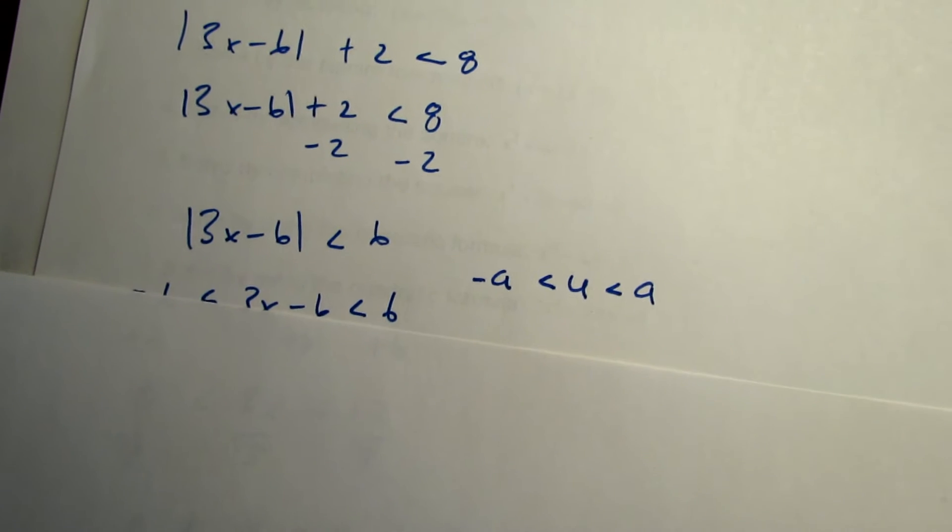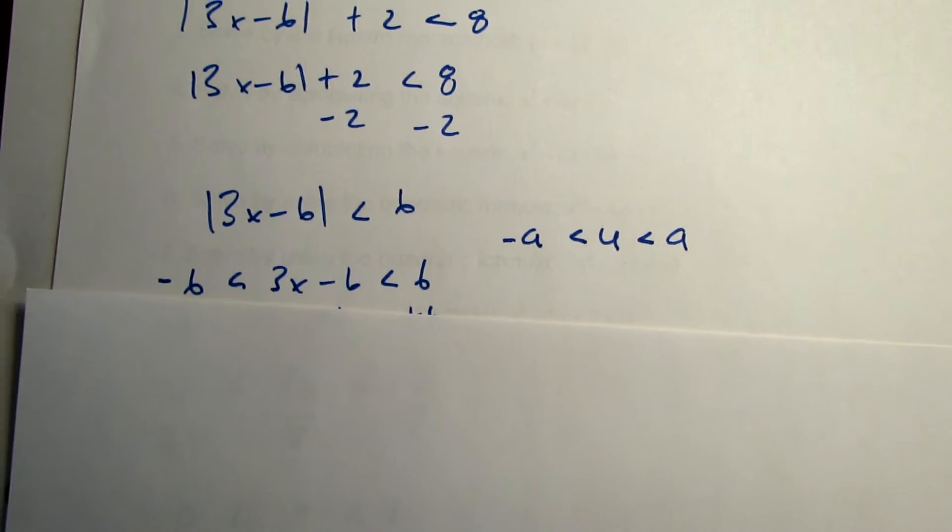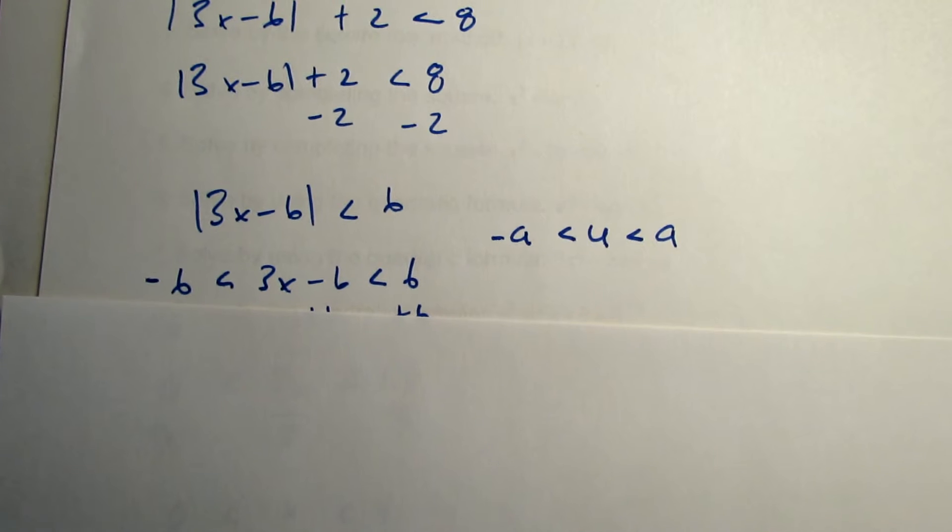Apply this theorem, and you should get negative 6 less than 3x minus 6 less than 6.